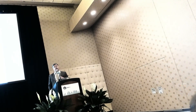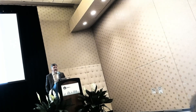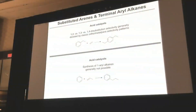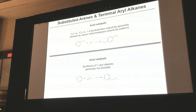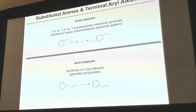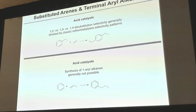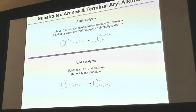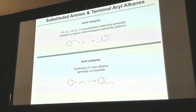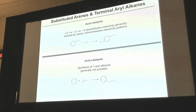With substituted arenes, the ability to control ortho/meta/para selectivity with the catalyst is a significant challenge. With organometallic homogeneous catalysts, this becomes possible. There are some potential products that one might want to make that are counter to the selectivity from acid-base catalysis. And also noted with alpha-olefins, the ability to make the one-substituted alkane — in this case, a one-phenyl propane — is a real challenge with acid-base catalysts.